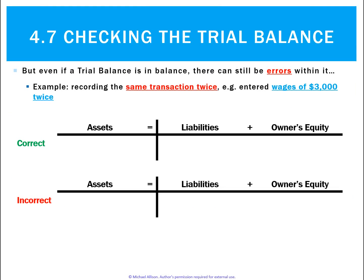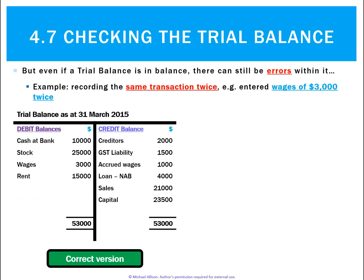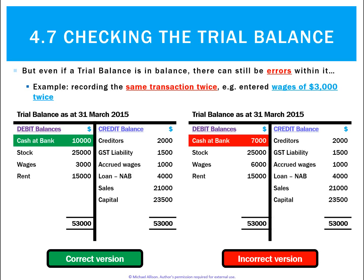One last error is if the same transaction was recorded twice. For example, wages of $3,000 were paid. The correct way to record this was cash going down $3,000 and owner's equity going down $3,000. The incorrect way was to double it up — so you accidentally recorded a decrease in cash of $6,000 and a decrease in owner's equity of $6,000 because your wages were doubled. Here's the correct trial balance — we've got cash and wages, and cash should be $10,000.